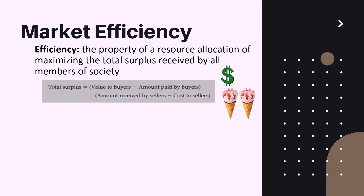Returning to the formula: after simple calculations, we can derive that total surplus equals value to buyers minus cost to sellers. This leads to an important conclusion: the well-being of a society in a particular market can be increased either by increasing value to buyers or by decreasing cost to sellers.